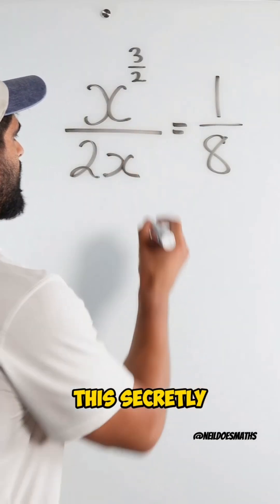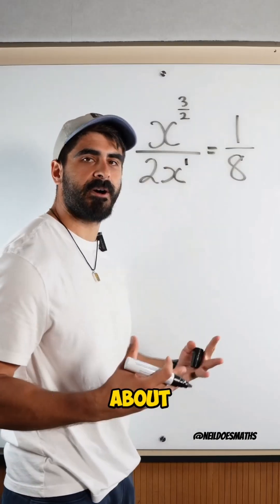This has powers, this secretly has a power of 1. I'm thinking about using my index rules.